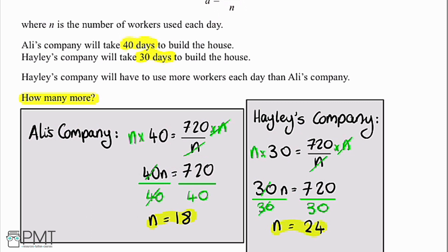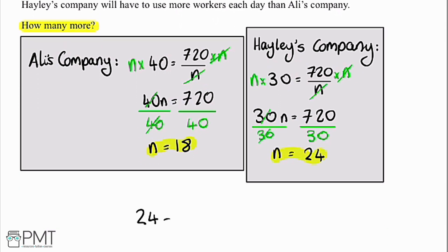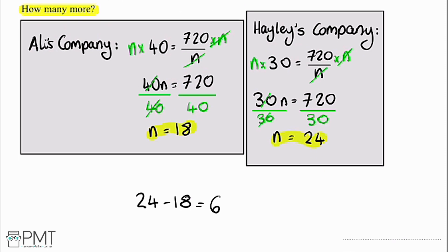So Hayley's company uses 24 workers. Now we're told that Hayley's company will have to use more workers than Ali's company, but we need to work out how many more. So to do that, we just need to find out the difference. So it's going to be 24, and subtract from that 18, gives us 6. The final answer is that Hayley is going to have to use 6 more workers.